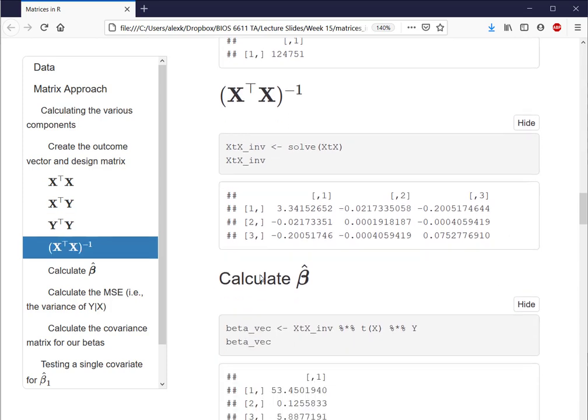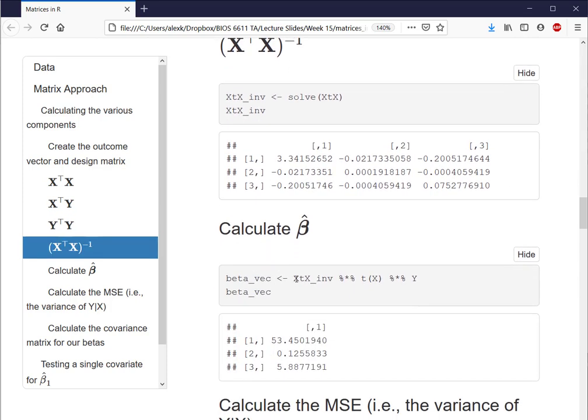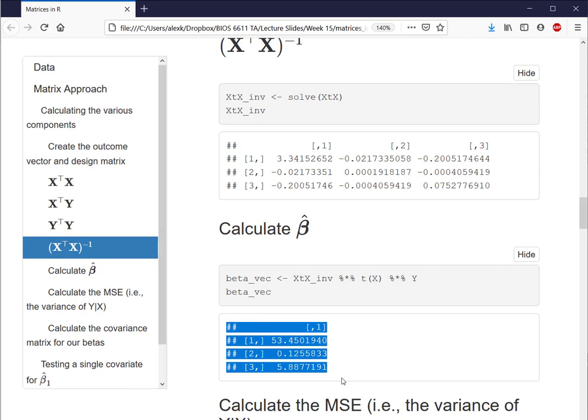With that information, then, we can calculate our vector of beta coefficients as the X transpose X inverse times the transpose of X times Y, where we see here, if we remember back to our lecture slides, we'll match the outcome we get from LM or GLM, and we'll verify that at the very end of this lecture.